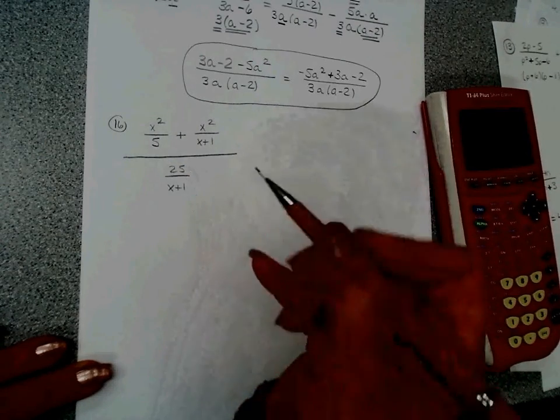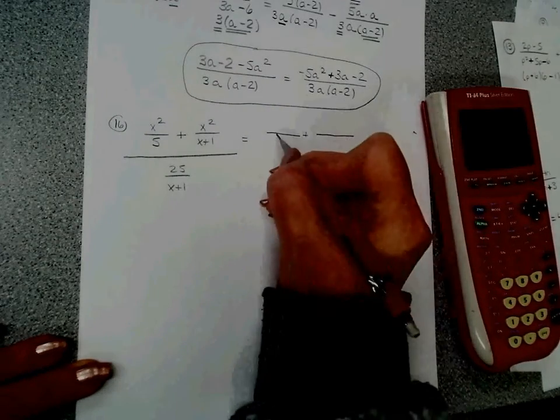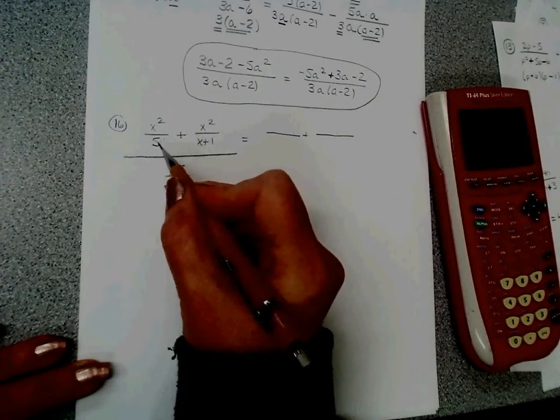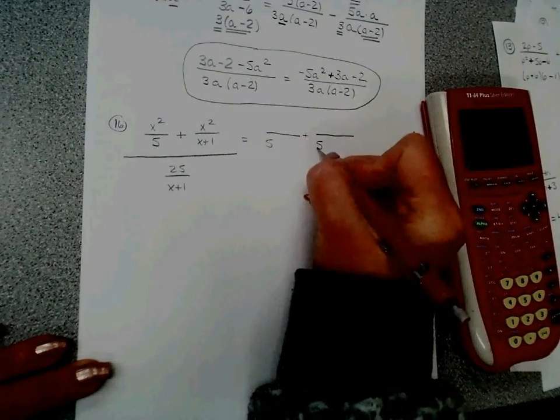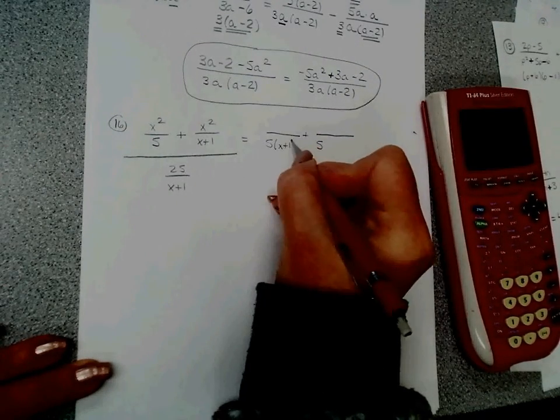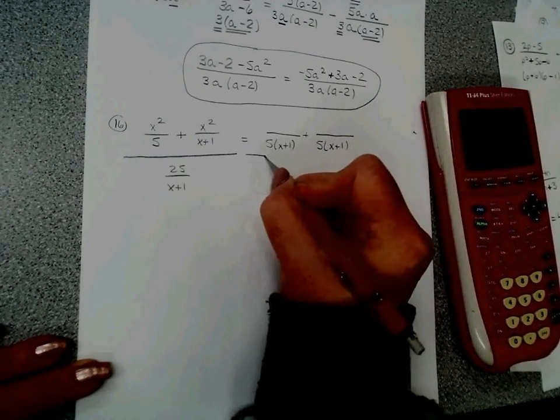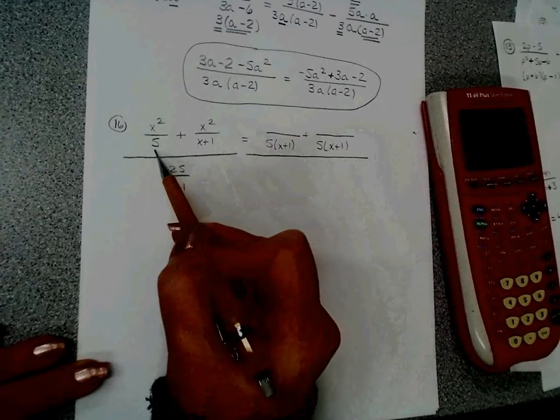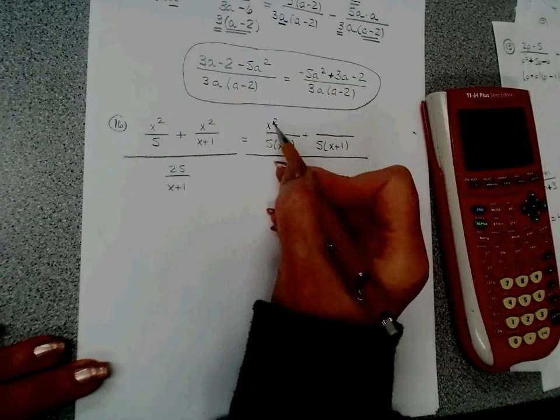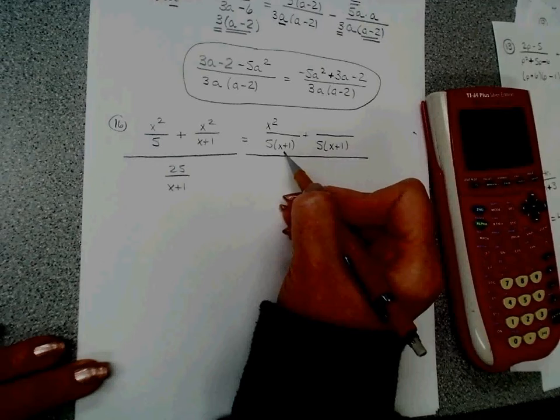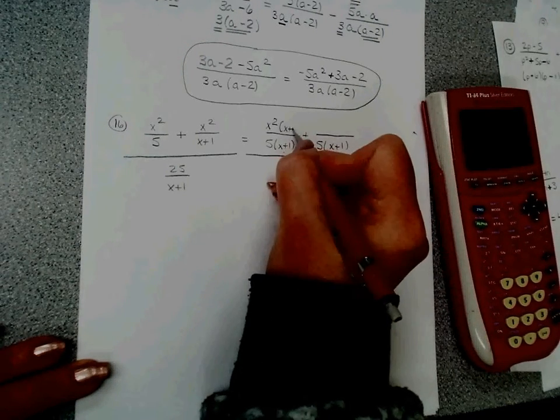So looking at the numerators, there's nothing to factor because they're already factored. My denominator has to have a 5 and it has to have an x plus 1. This one already had an x squared on the top, so that's what I started with. This x plus 1 is extra.